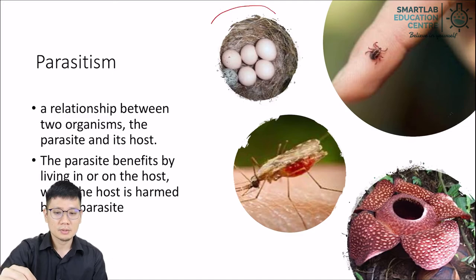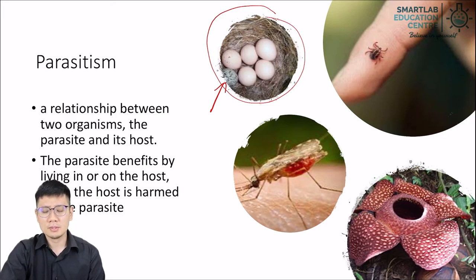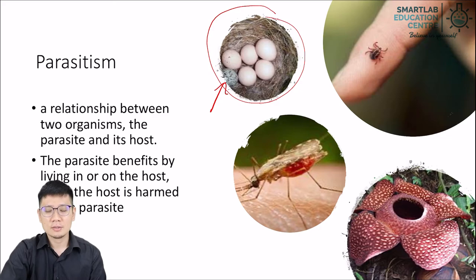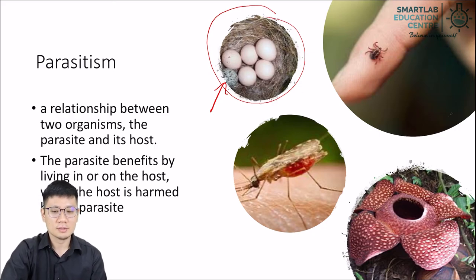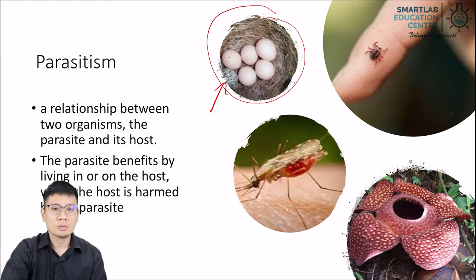Another example is the cuckoo egg. There's a nest with bird eggs, but one egg which is slightly different from the others — that's a cuckoo egg. The cuckoo is a sort of parasite: it lays its egg in the nest of other birds and leaves it there. When the egg hatches, the host bird may not be able to tell the difference between its own children and the invader, and ends up taking care of the cuckoo as though it were its own — at the expense of that host species' own actual offspring.